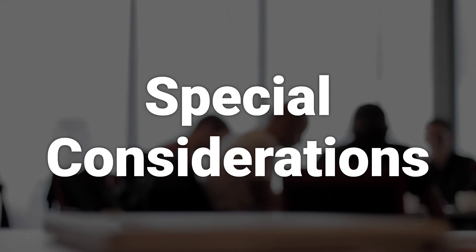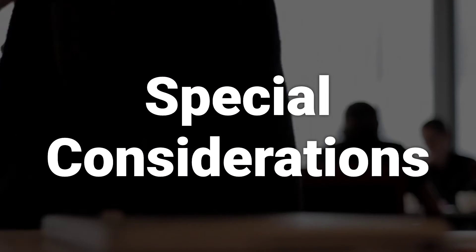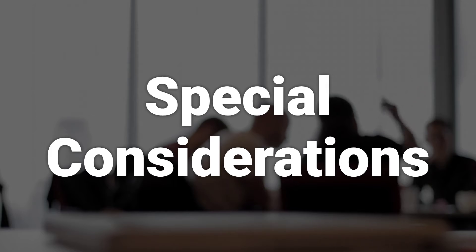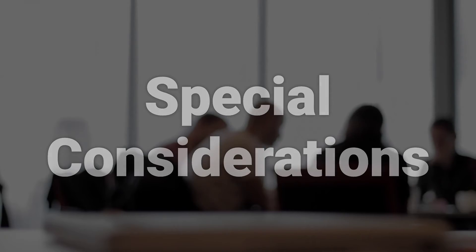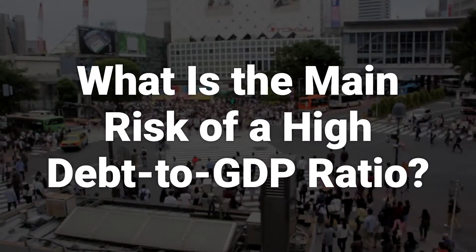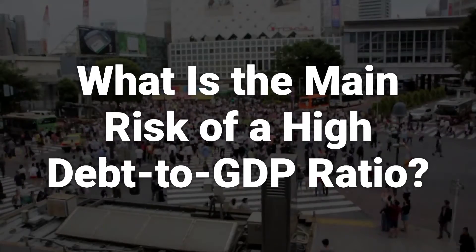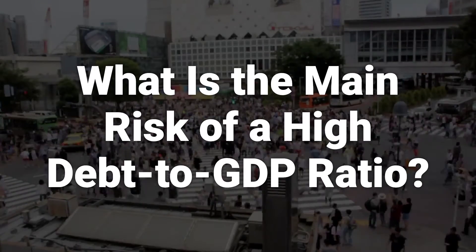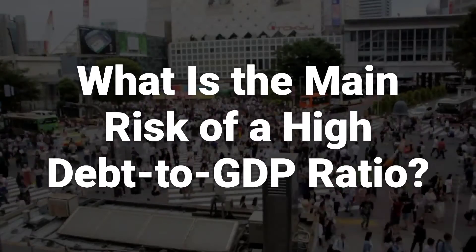The US finances its debt by issuing US treasuries, considered to be the safest bonds on the market. High debt-to-GDP ratios could indicate increased default risk, leading to global financial repercussions. A high debt-to-GDP ratio is a key indicator of increased default risk for a country, potentially triggering global financial repercussions.